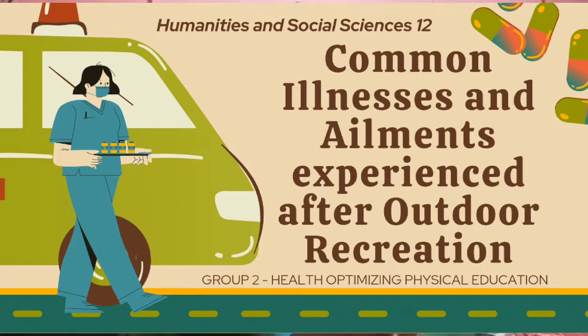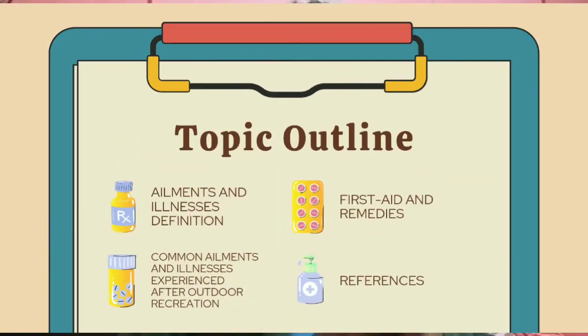The topic outline of this presentation will be: first, the ailments and illnesses definition; second, the common ailments and illnesses experienced after outdoor activities; third, the first aid and remedies; and of course, the references. So, let's start.